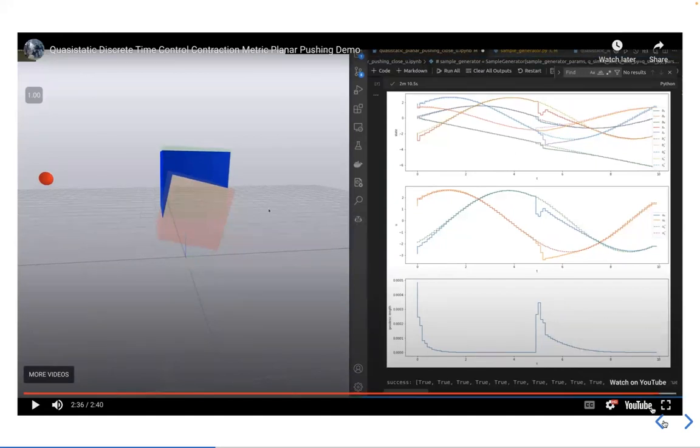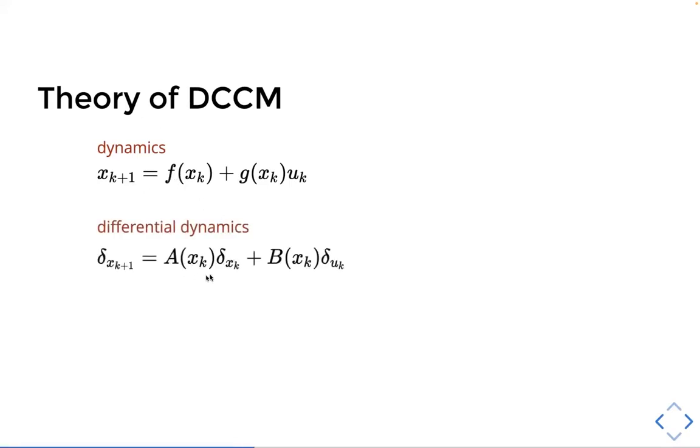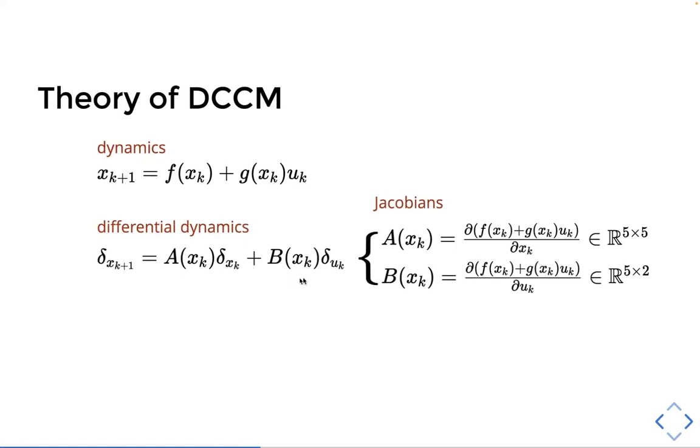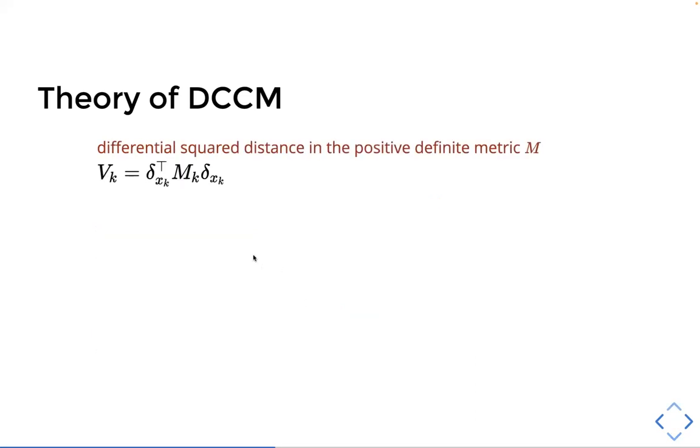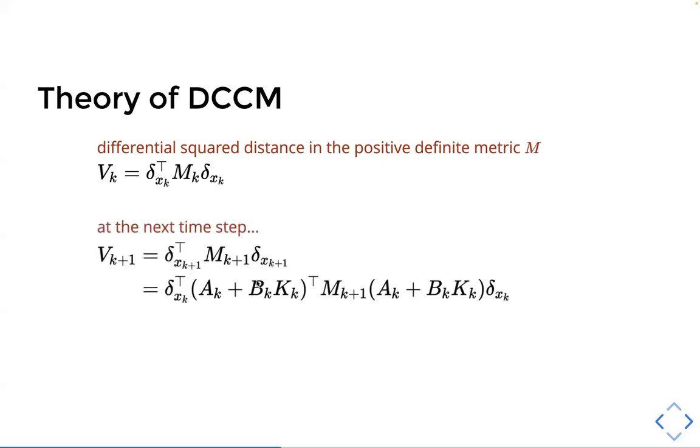So now I'll talk about how I've managed to do this and go into the theory. So theory of the discrete time control contraction metric. First, we have the dynamics. So this is discrete time. And then this will be the differential dynamics where the A and B matrices are the Jacobians. And then we can define a differential state feedback control law, which tells us the delta U for a particular delta X.